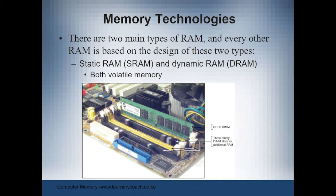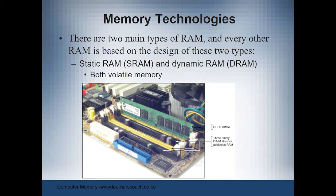Static RAM represents static random access memory, and dynamic RAM represents dynamic random access memory. These are the main types of RAM that you can purchase. It's very important to understand their key differences and similarities. Both of these RAM types are volatile — meaning you can lose information if you don't save your work. They act as the main memory of the computer, holding data in a temporary location.